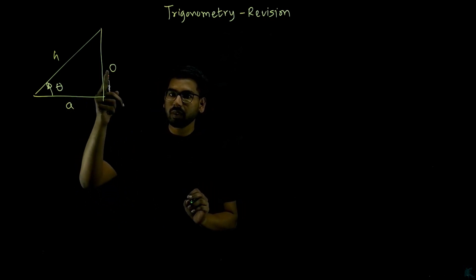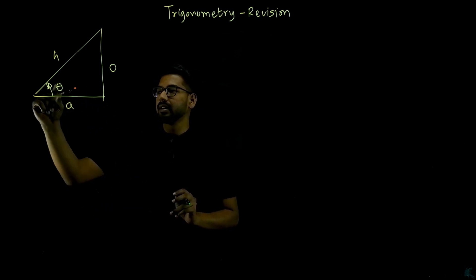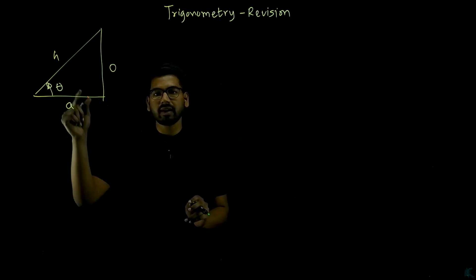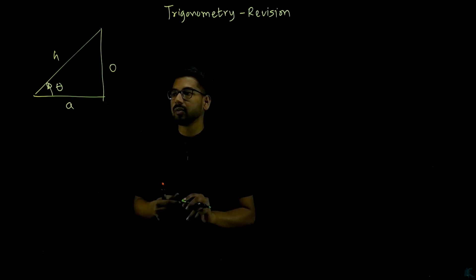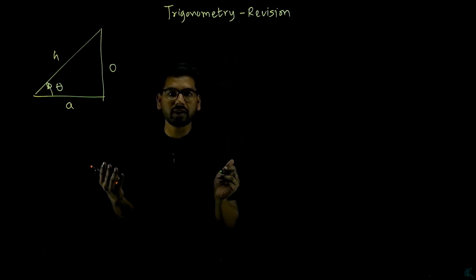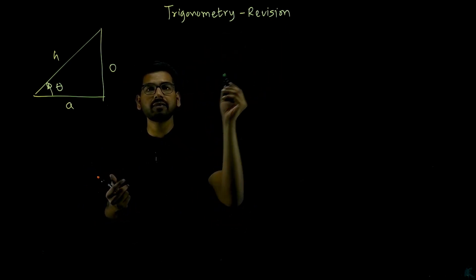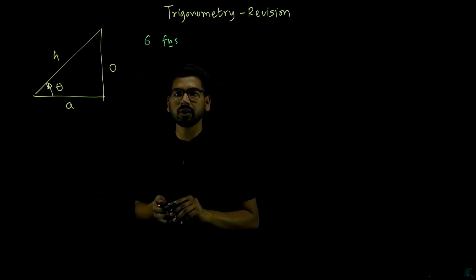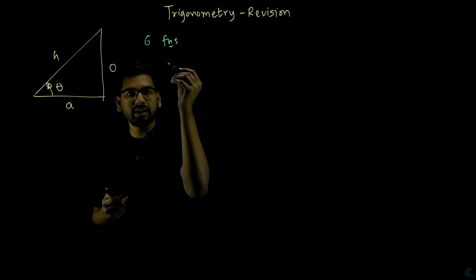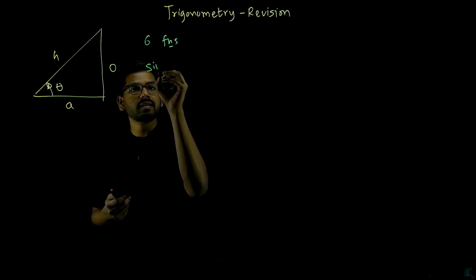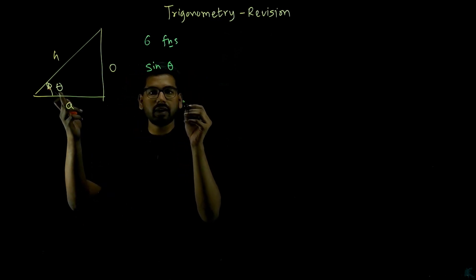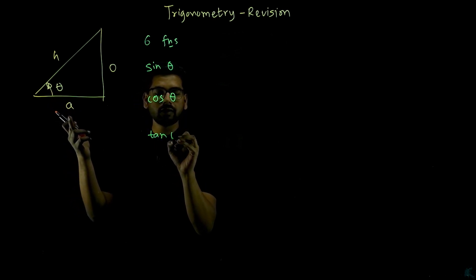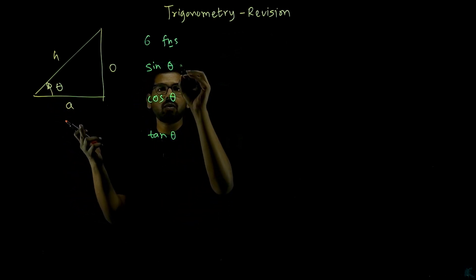The ratio of these three sides depends on the angle theta. If angle theta is more, the opposite will be more; if angle theta is less, the opposite will be less, and the ratios change. Based on this, we have six combinations of ratios — those are the six trigonometric functions. The first three of the six functions are sine of theta, cos of theta, and tan of theta.